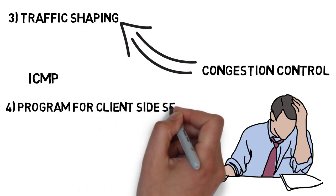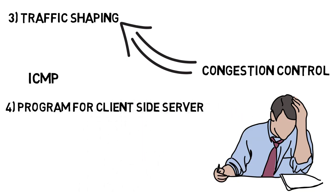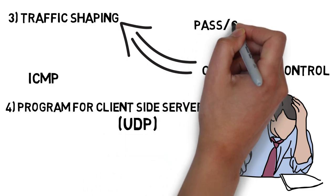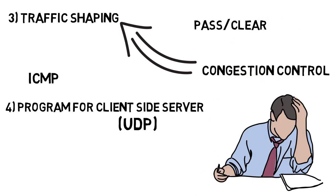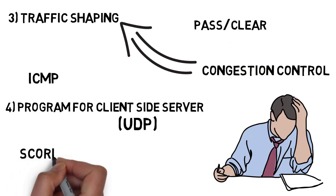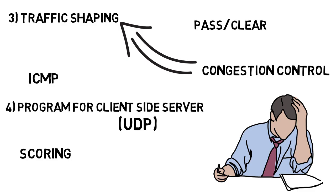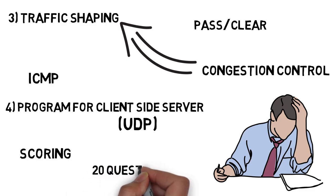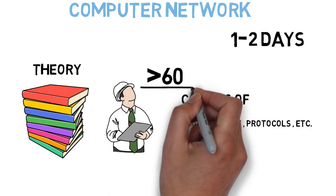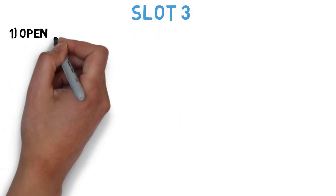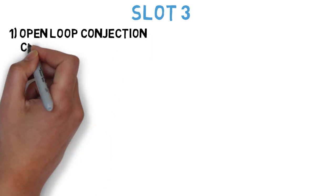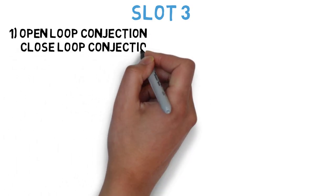The last question for Slot 2 is: write a program for a client-side server application using socket programming — that is UDP. It can come for five to ten marks. These two slots are really important if you want to pass or clear the subject. But since CN is a scoring subject, I suggest you go through all 20 questions so you can easily get 60 plus.